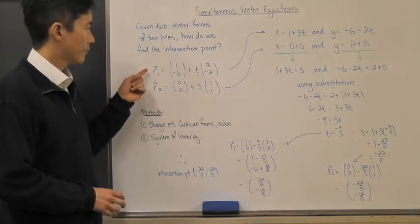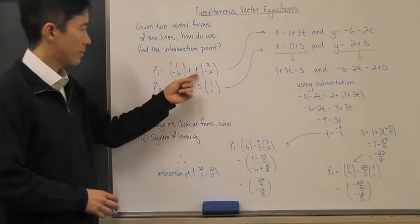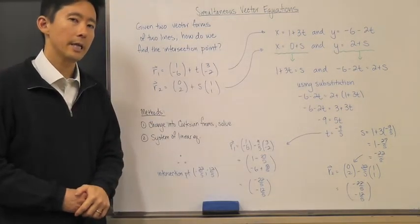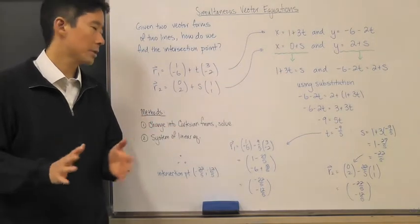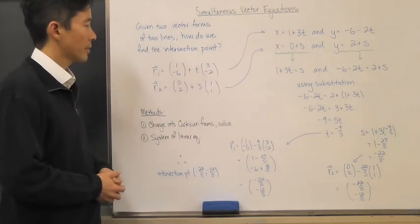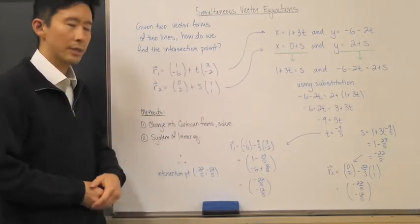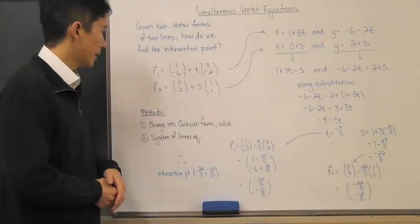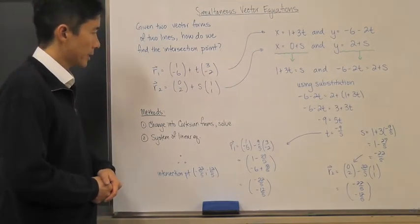...is that for line 1 and line 2, the parameters are both different—they're not the same. It's important that we keep them separate because we're going to have to actually find out what those values are.